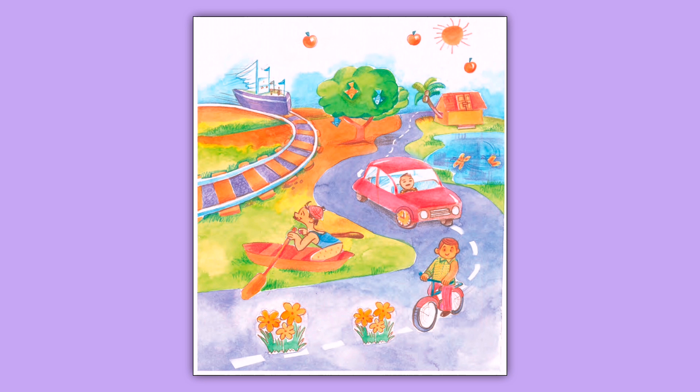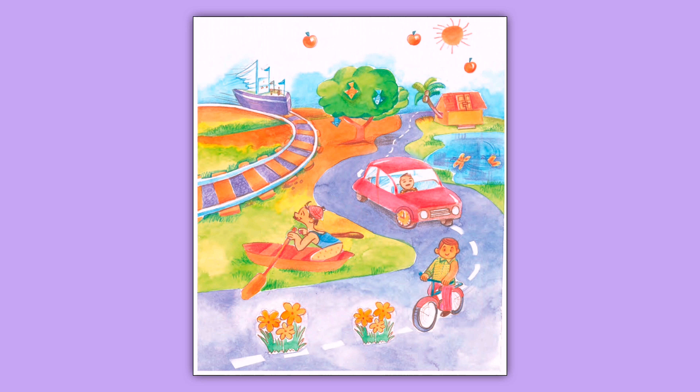Next हम देखेंगे — a man is sailing a boat in the grass. एक आदमी बताया गया है जो boat में बैठा हुआ है। Boat जैसे कि बच्चों आप लोग जानते हैं, हमेशा पानी में sail करती है। लेकिन इस funny picture में एक आदमी boat के साथ grass पर sail कर रहा है। क्या ये possible है? No, बिल्कुल भी नहीं। तो ये seventh funny thing है जो हम इस picture में note कर रहे हैं।